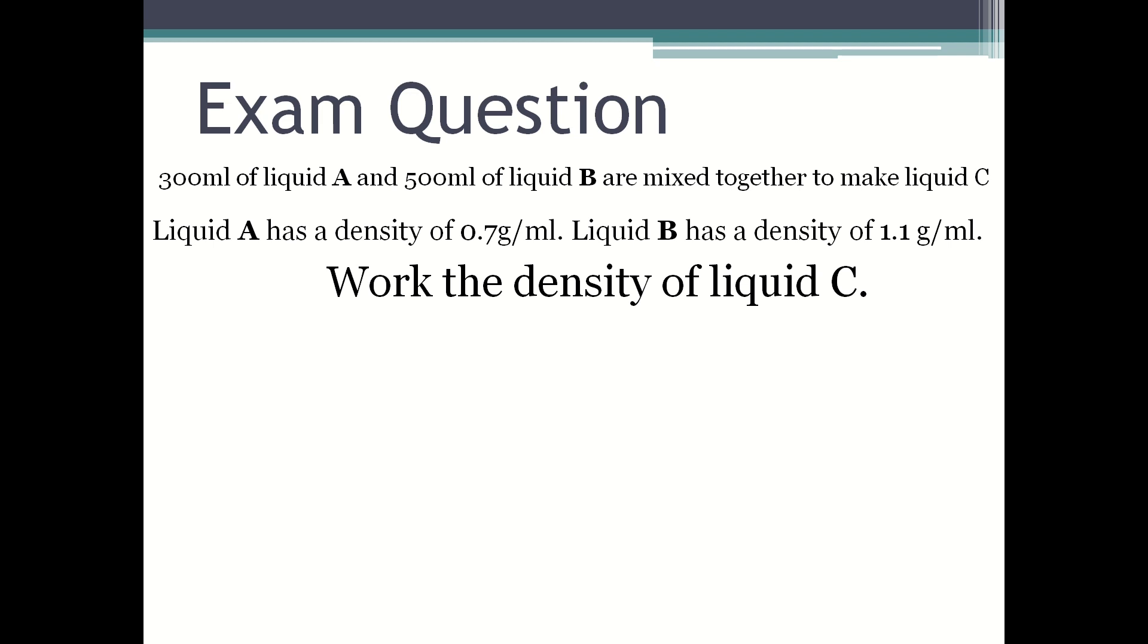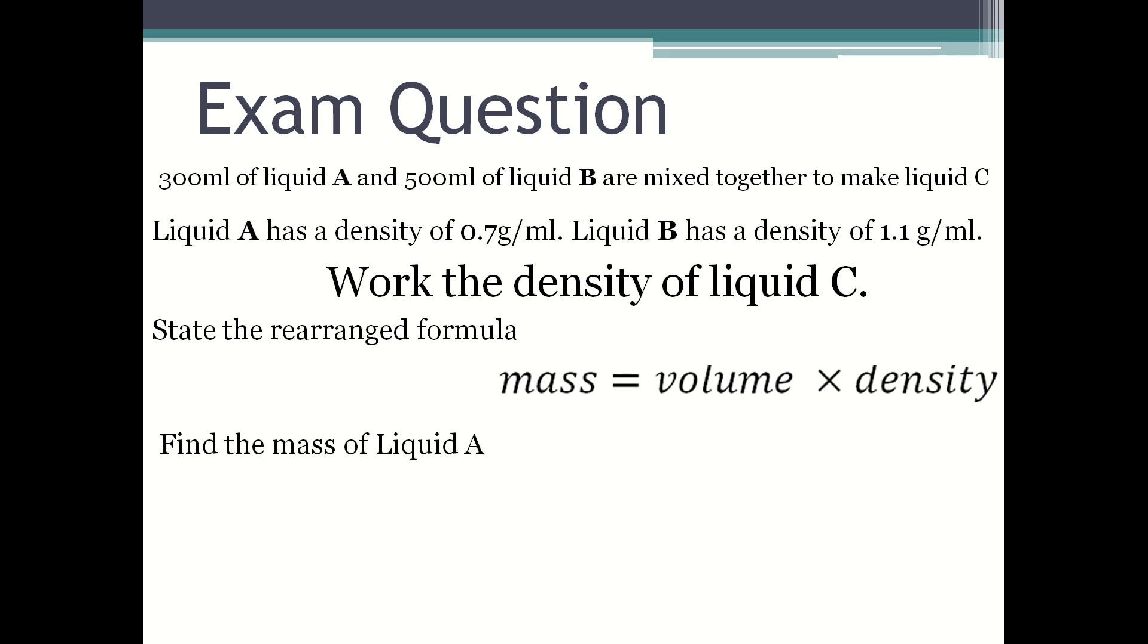State the rearranged formula. Right now we're looking for mass, so mass equals volume times density. Find the mass of liquid A: mass equals 300 multiplied by 0.7, and that is 210. So the mass of liquid A is 210 grams.